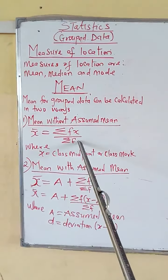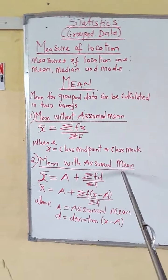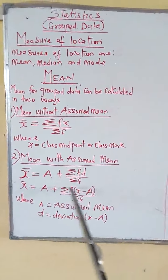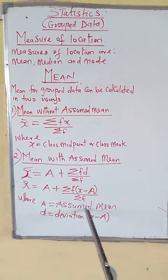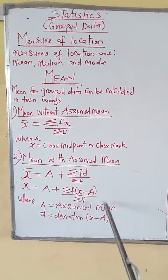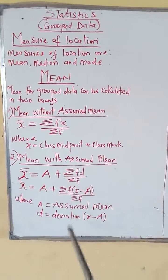Where A is the assumed mean, which will be given to you in the question. If it is not given, you can use any value for it. Choose any value of your choice; you will still arrive at the same answer.